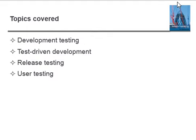The objective of this chapter is to introduce software testing and software testing processes. You will understand the stages of testing, from testing during development to acceptance testing by system customers. You will be introduced to techniques that help you choose test cases geared to discovering program defects, and understand test-first development where you design tests before writing code and run these tests automatically.